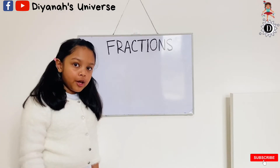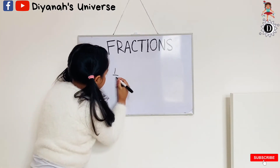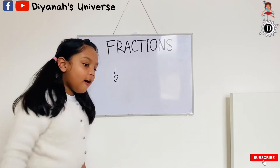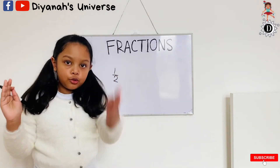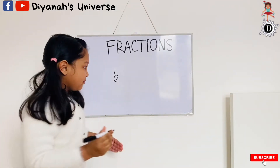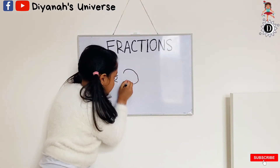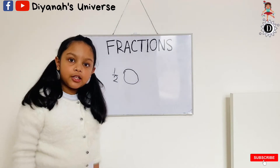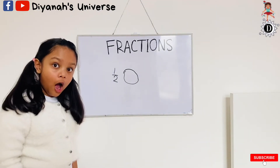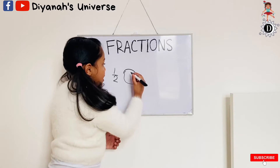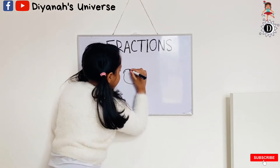Let's start with half. Half means something divided into two equal parts. For example, I have a circle here and I want to divide the circle into two equal parts, or a half. So I need to put a line in the middle like this.